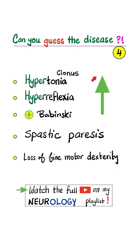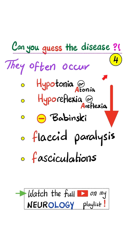Sometimes he shows these kinds of motor deficits, with hypertonia, hyperreflexia, and positive Babinski. And sometimes he shows the opposite, with hypotonia, hyperreflexia, and negative Babinski.